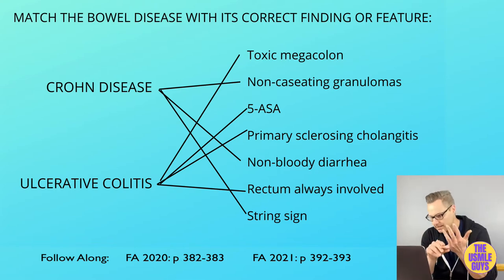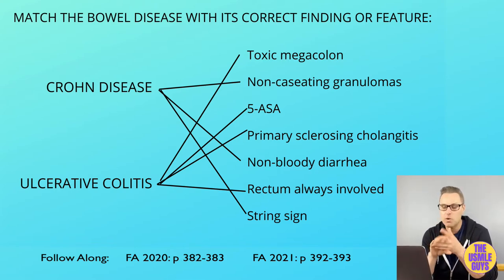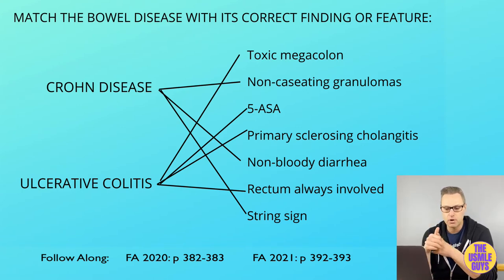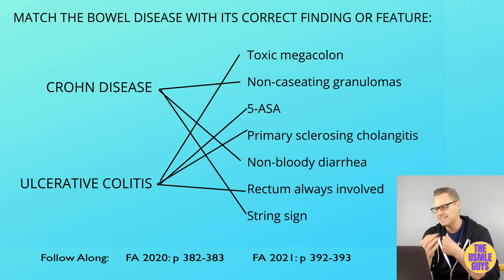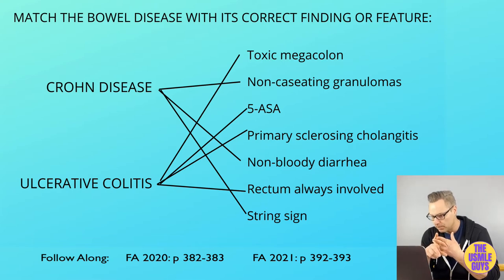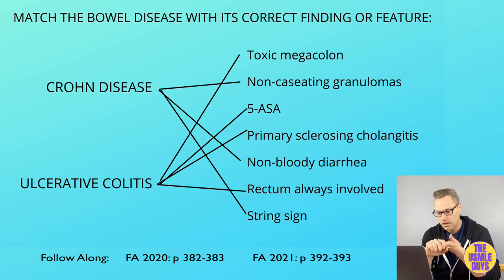Both conditions may have overlapping extra-intestinal findings including arthritis, rashes, oral ulcerations, and eye inflammation. Treatment for Crohn's includes steroids, azathioprine, antibiotics, and biologics, whereas ulcerative colitis management includes 5-ASA, 6-mercaptopurine, infliximab, and colectomy.